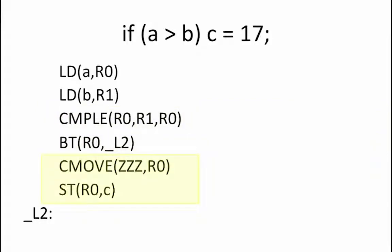Finally, if we set zzz equal to 17, then when the branch is not taken, we will move 17 into R0 and then store that value into the location pointed to by address C. So, the complete translation of this conditional statement to beta assembly is shown here.